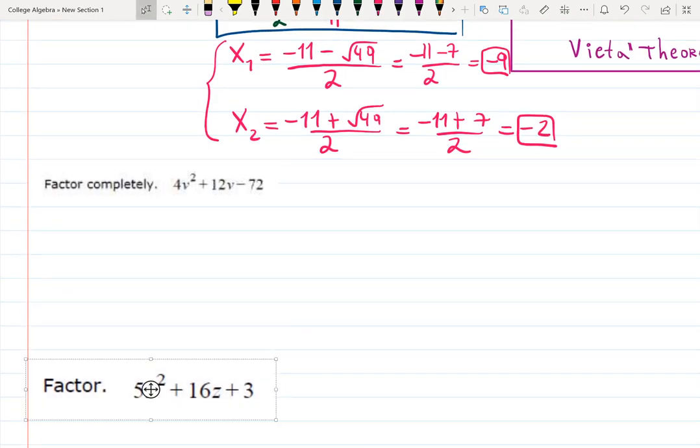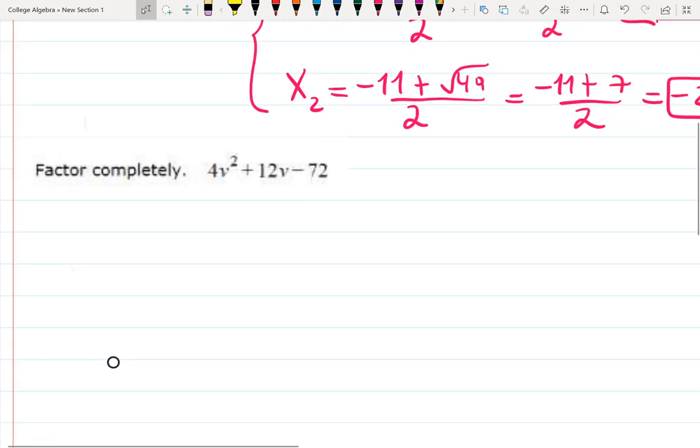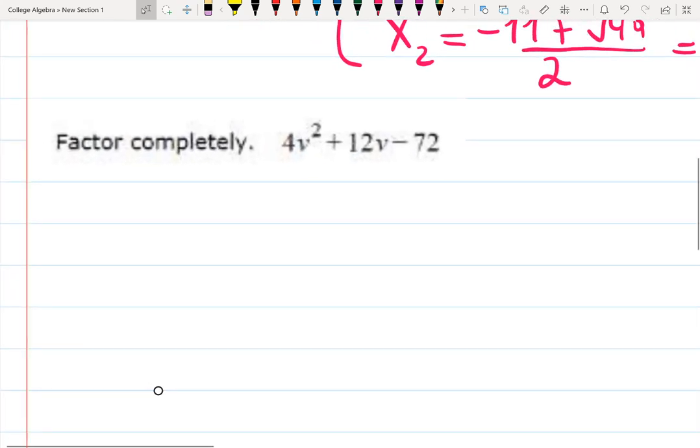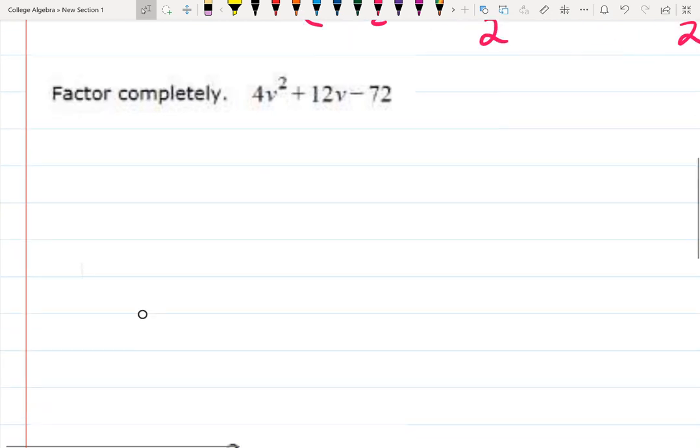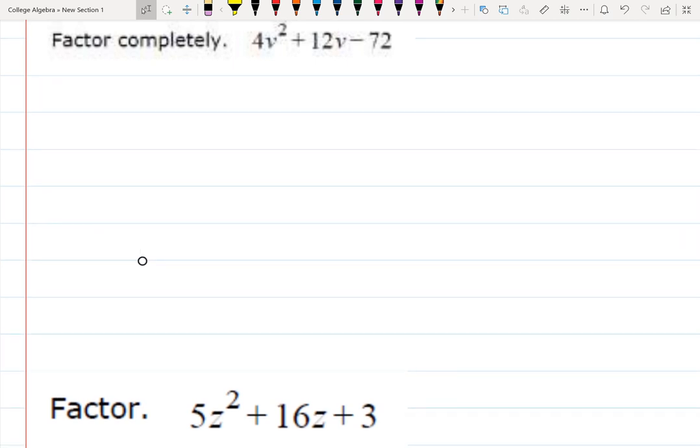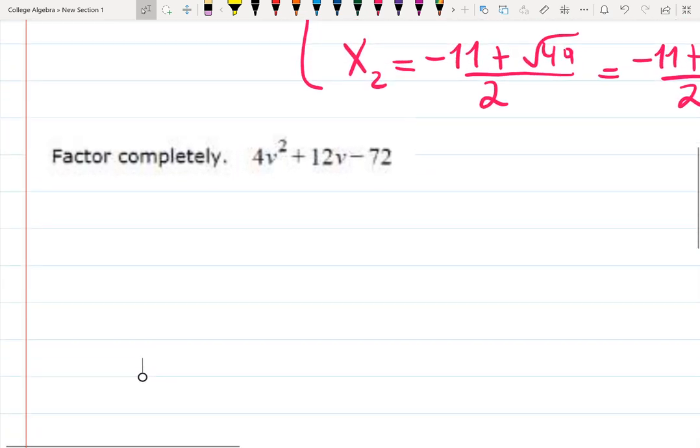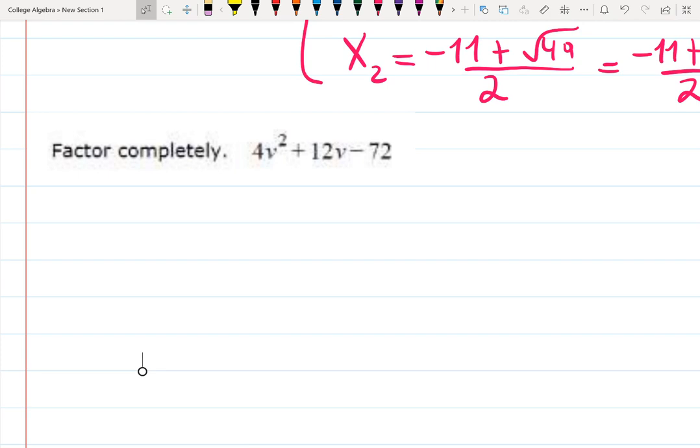Second example and the third example both have a in front of it. And this is what you should do. Technically speaking, every time you have a in front of the quadratic expression, you should factor it out if you plan to use quadratic formula. So, in those two examples, I should factor it out.